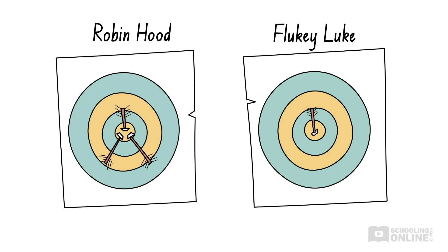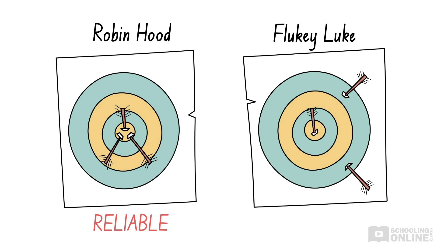Is he as perfect as Robin Hood? Unfortunately not, because both of his following shots miss the target. It seems that Fluky Luke's first shot was just luck. As we can see, Robin Hood is the more reliable archer, as he consistently hits the bullseye. Compared to Robin Hood, Fluky Luke is less reliable.